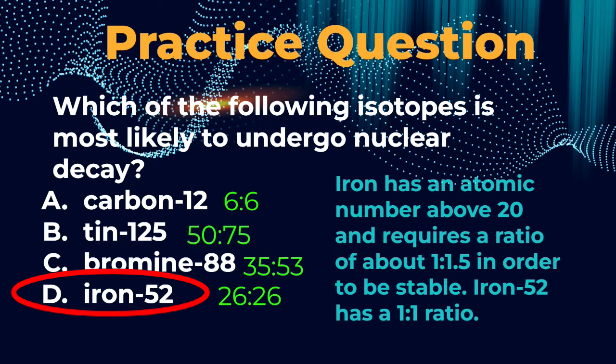Okay, hopefully you selected D, iron-52. Now let's talk a little bit about the phrasing of the question. When they ask which is most likely to undergo nuclear decay, they're basically saying which of these isotopes is unstable. Now we can take that a step further. Unstable would mean that the ratio of protons to neutrons is not ideal. So what we need to consider here is what size nuclei are we dealing with, and should they be abiding by the 1 to 1 ratio or 1 to 1.5 ratio?